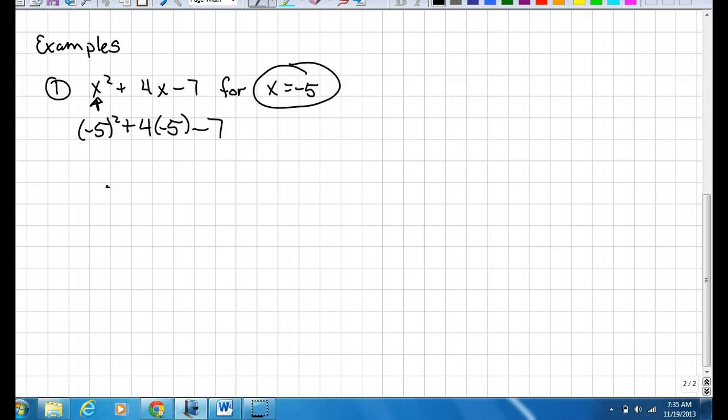And then you simplify it using PEMDAS. So negative 5 squared is 25 plus 4 times negative 5 is negative 20 minus 7. Simplify that further, you have 25 plus negative 27, which is negative 2.